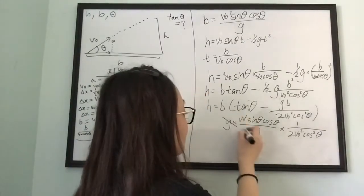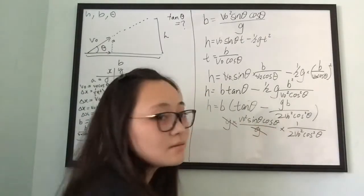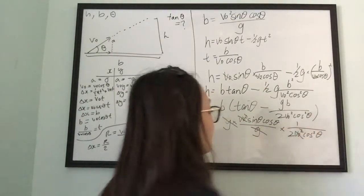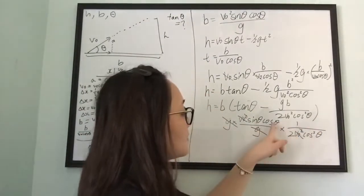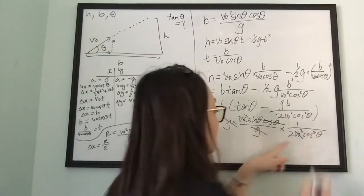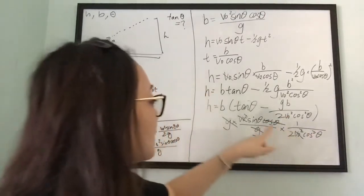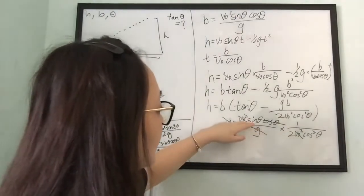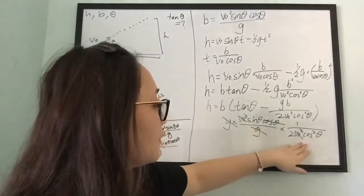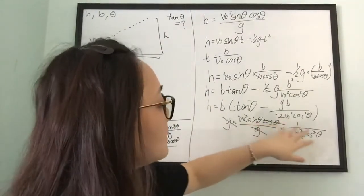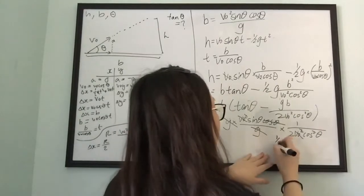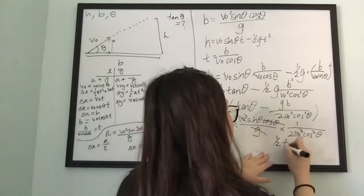Now g is cancelled, v-naught² is cancelled, and one of the cosine terms is cancelled. We're left with sine(θ) over cosine(θ) at the bottom — and sine(θ) divided by cosine(θ) is tangent. So that term becomes one-half tan(θ).